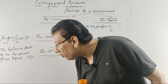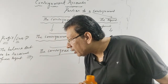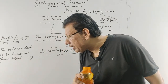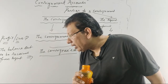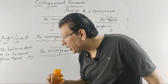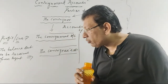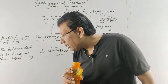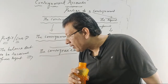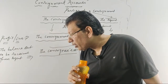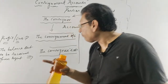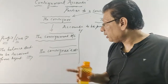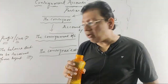Consignment account is a nominal account — students correctly answered nominal. And the consignee's account — what type? Personal account. Very good. Now, what is a proforma invoice? Priyansu Misra says proforma invoice is a preliminary bill of sale sent to the buyer before the shipment. What is the difference between proforma invoice and invoice?